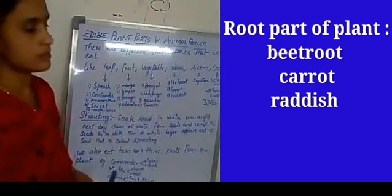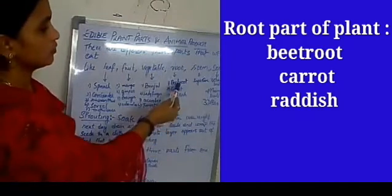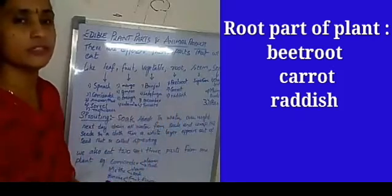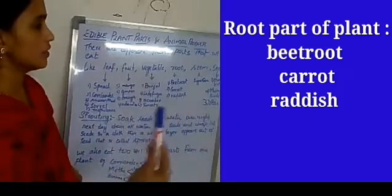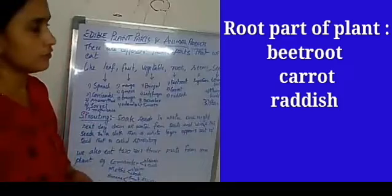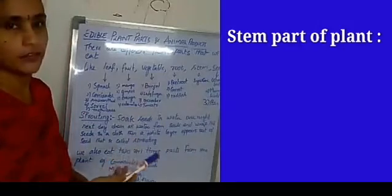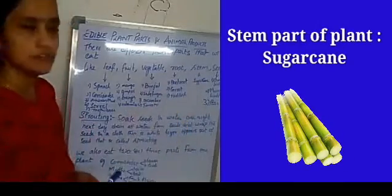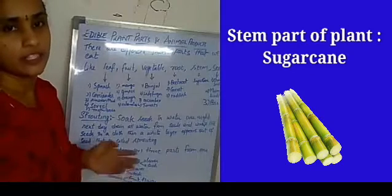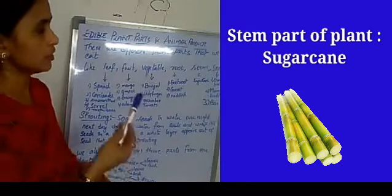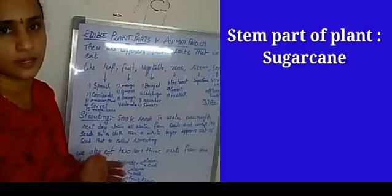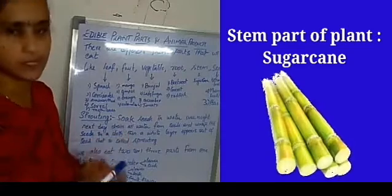The root part of plants — we know beetroot, carrot, radish — all these are the root part of plants. Next, the stem part. An example of the stem part we eat is sugar cane. We get sugar and jaggery from sugar cane. Sugar cane juice is extracted from the sugar cane stem, and from that juice they prepare jaggery and sugar.